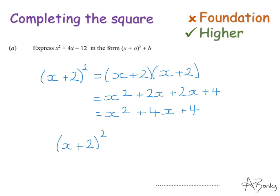If I put on the end minus 16, that when I expand and simplify it, will give me that. So this is the answer, this is this expression in this form. If they asked me to write down a and b, a would be positive 2 and b would be minus 16.